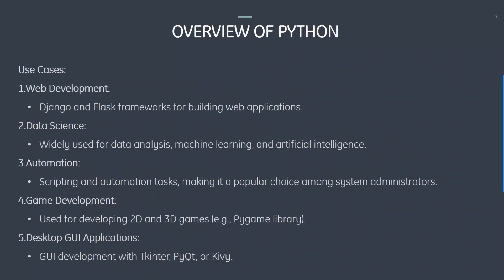What are the use cases for Python? We use it in web development such as Django and Flask frameworks for building web applications. It's widely used for data science, machine learning, and artificial intelligence. We also have automation — scripting and automation tasks making it a popular choice among systems administrators. It's used for game development such as 2D and 3D games using the Pygame library, and desktop GUI applications with Tkinter, PyQt, or Kivy.